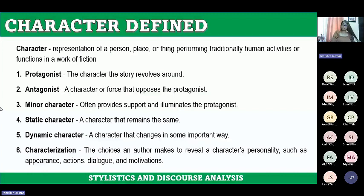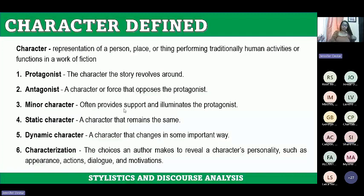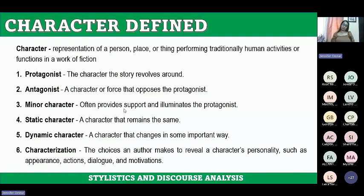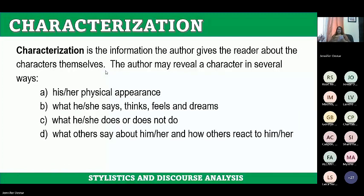Then another term is characterization — the choices an author makes to reveal a character's personality. Characterization is shown through the appearance, action, and dialogue, as well as the motivation of the character. The indicators of characterization are: appearance — what the character looks like; action — how the character behaves; dialogue — how they speak and their choice of words; and motivations — what their goals and purposes are in the story.